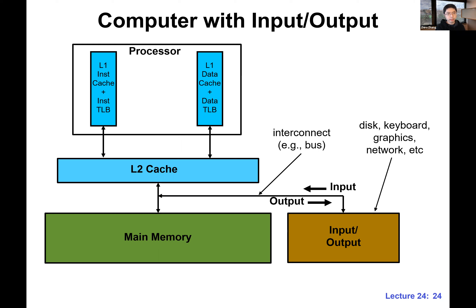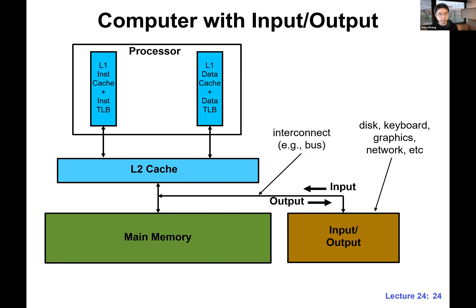Usually we have additional interconnects or buses — some of those are faster, some are slower, depending on the different kinds of I/O devices that we're using. They are connected to the main memory, to the memory system somehow. So this is actually an extension of the memory system, and we're going to be leveraging that extension to speed up some of the I/O accesses.